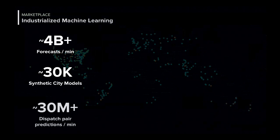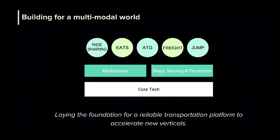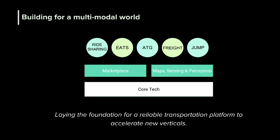We're doing 30 million dispatch pair predictions every minute. The recipe for making this happen is: build everything for scale, build it for reliability. From our perspective, you requesting a car and not getting one is the worst thing that can happen. So accuracy becomes really important — every basis point matters. By building this core technology, we can layer on application-level things like marketplace or maps. Once you figure out all this magic, you can build these vertical businesses that leverage it in a uniform way. We started with ride sharing, quickly bootstrapped Eats, and in the future will use this for ATG, freight, and our recent Jump Bikes acquisition.